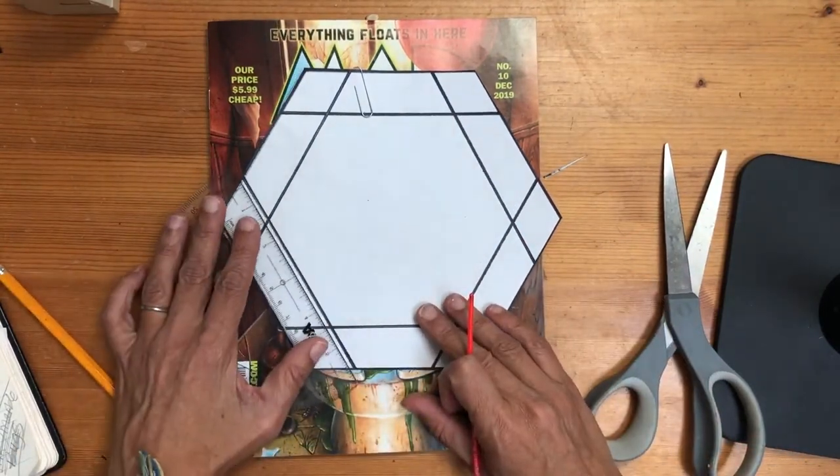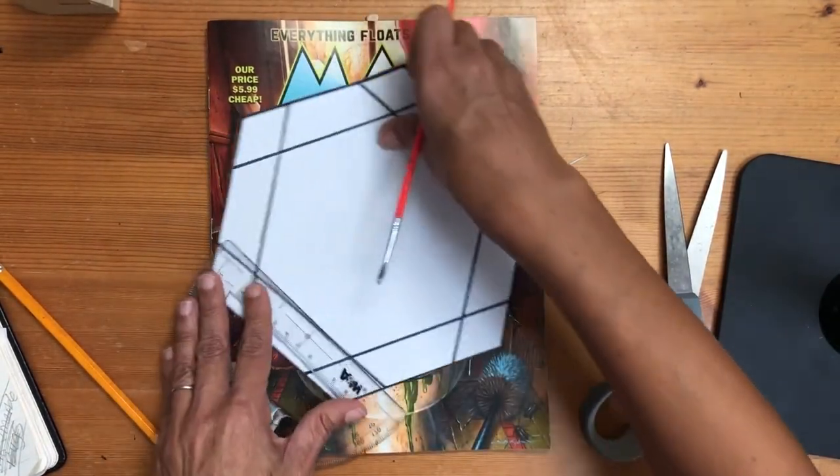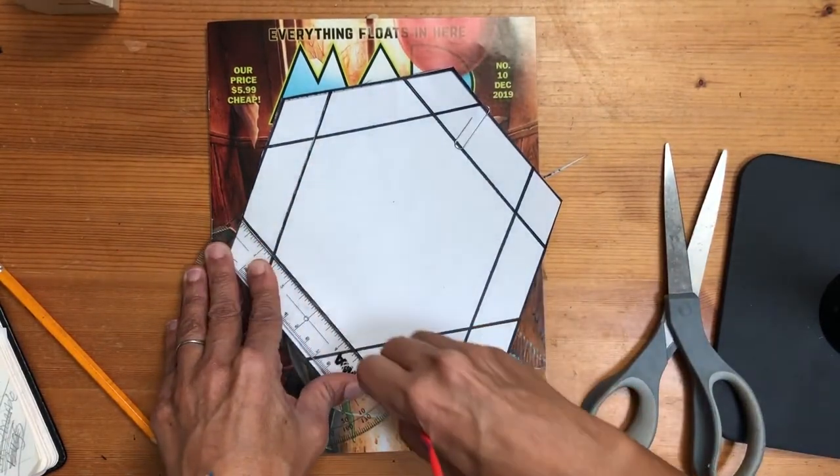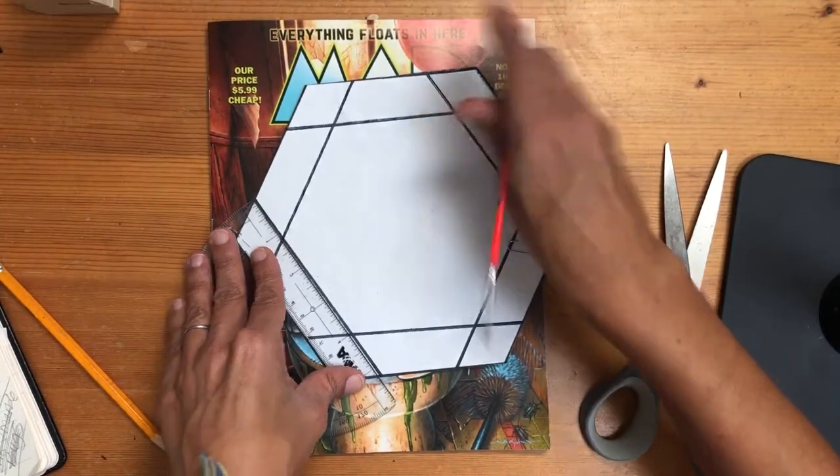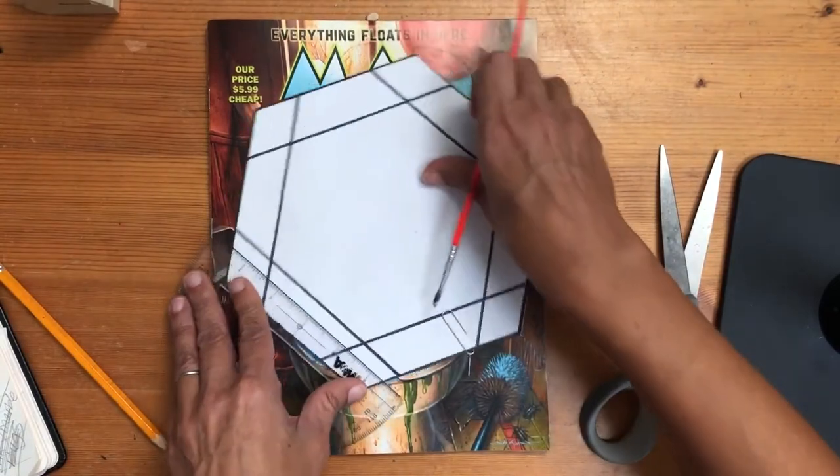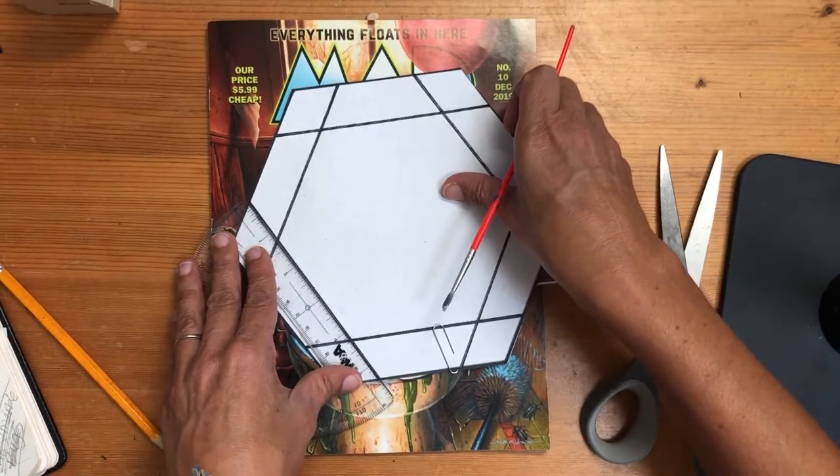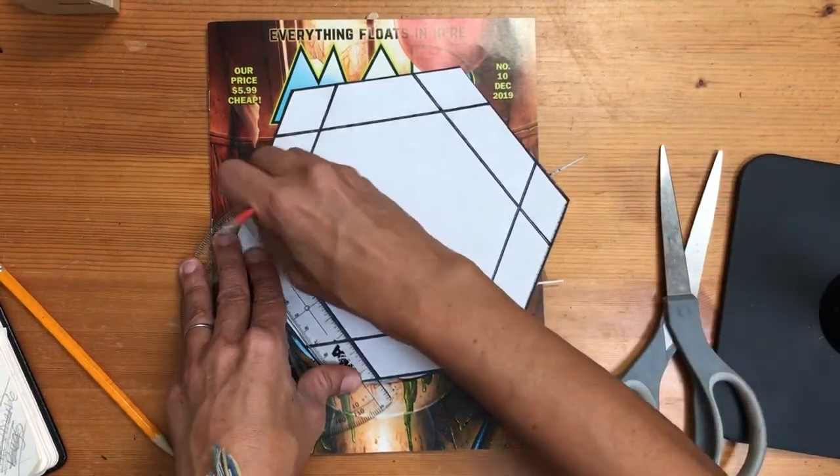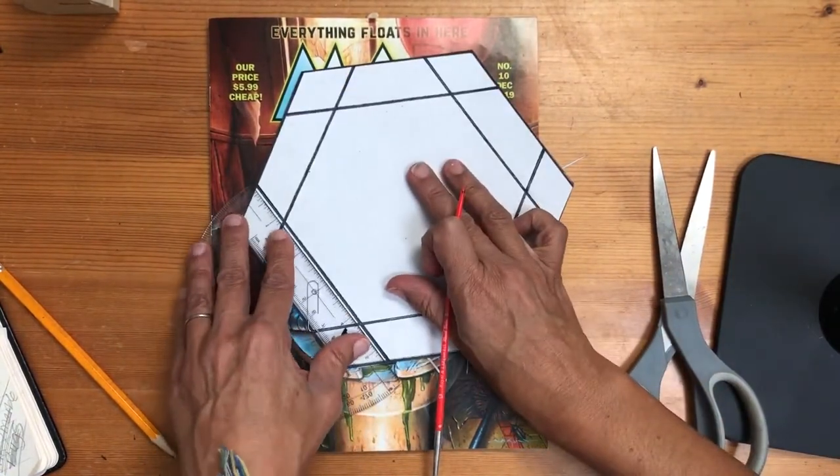What we're going to do is line the ruler up to the template lines and push down hard to score the indentations so that it leaves an impression on the colored paper below. When you're lining the ruler up to the template lines, do not put the ruler directly on the line, but back it up a little bit to allow for whatever width of surface you're using to score so that it falls exactly onto the template lines.